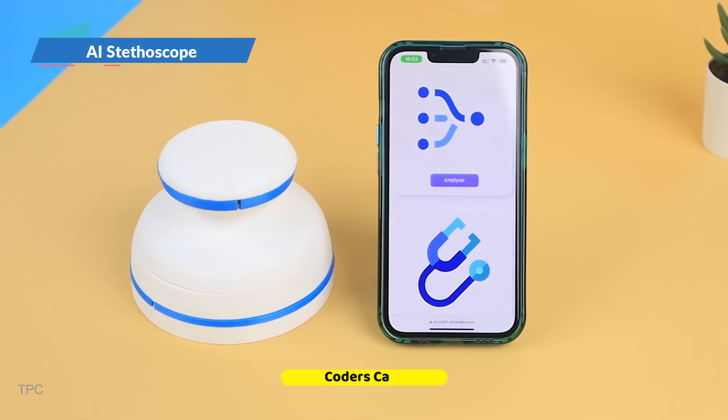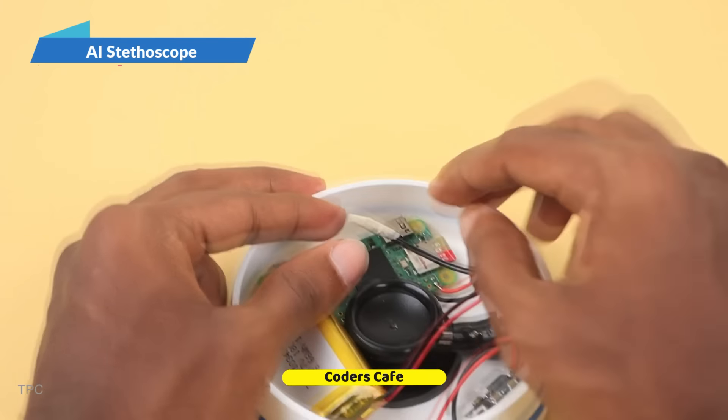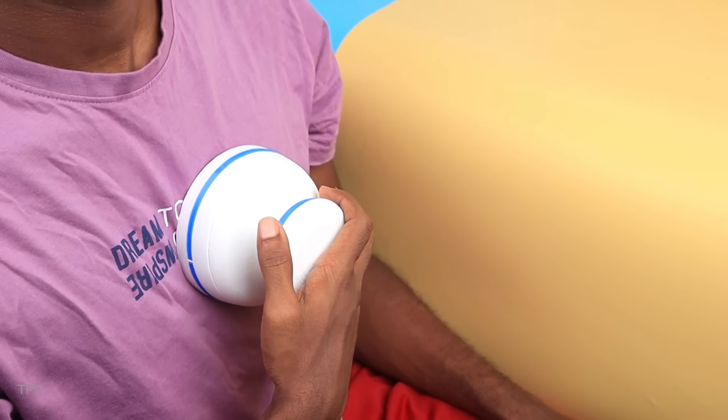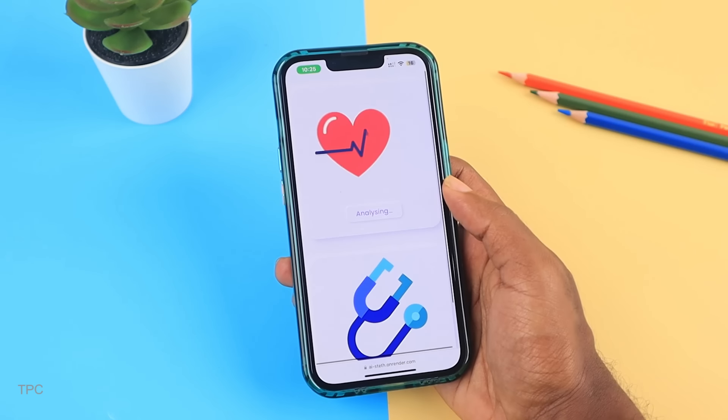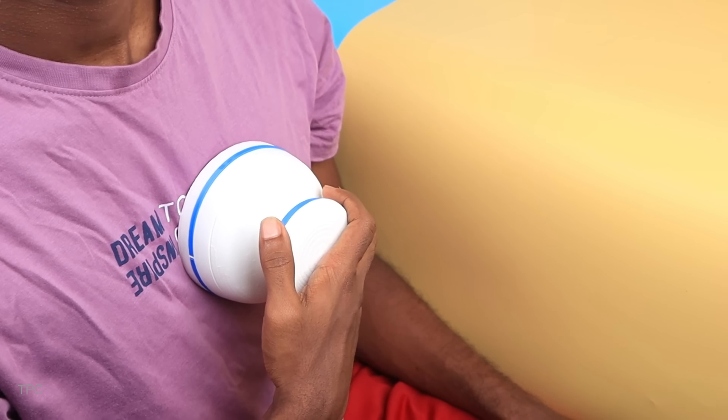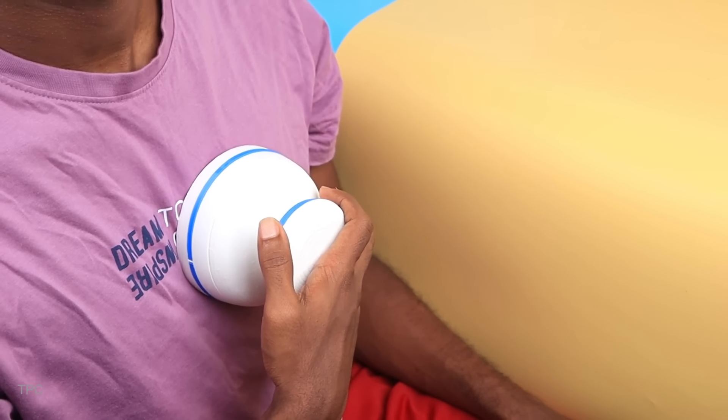The Coders Cafe team transformed a regular stethoscope by adding smart AI technology, enabling heart health tracking from anywhere. This enhanced stethoscope not only lets you listen to your heartbeat, but also allows easy connection with your doctor, providing a comprehensive view of your heart health, all from the comfort of home.